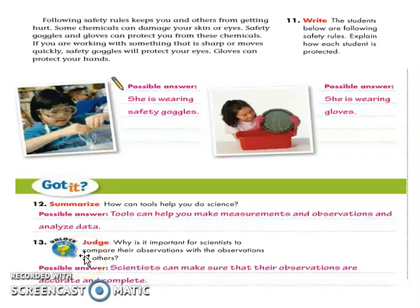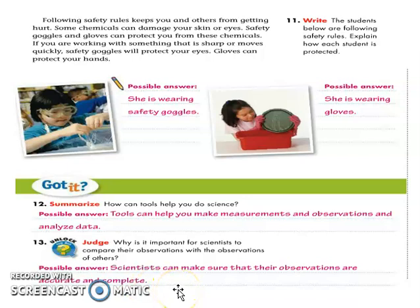Number 13: why is it important for scientists to compare their observations with the observations of others? It's very important. For example, if you see that your classmate's answer in the lab is different from yours, it's important to ask why. That is not cheating — it's just comparing answers. Scientists compare to make sure their observations are accurate and complete, and that's why the opinions of others matter when doing experiments.